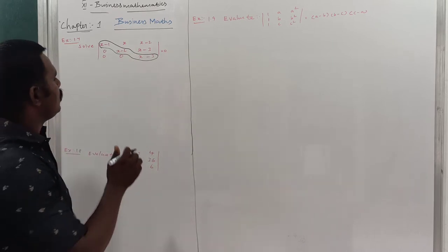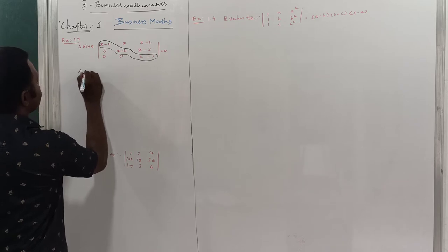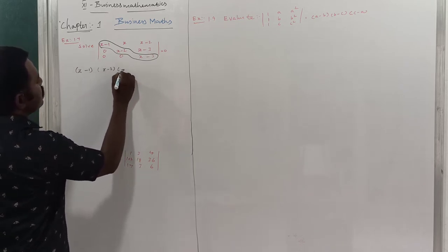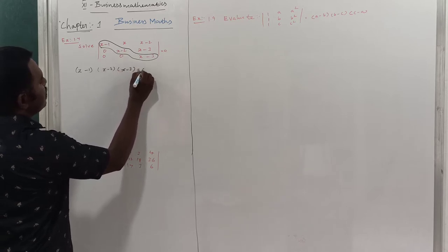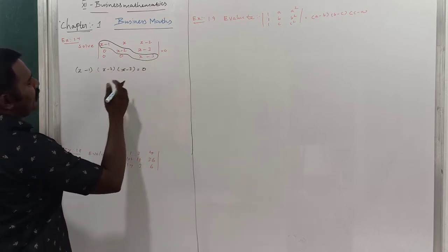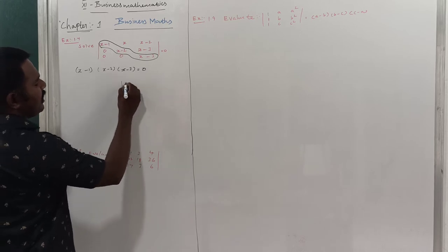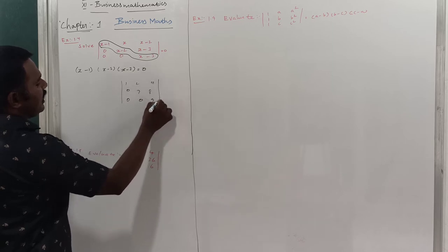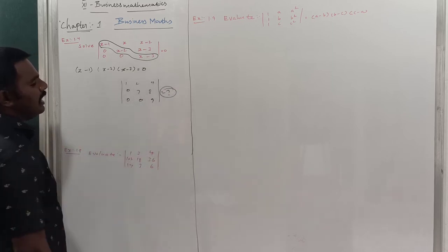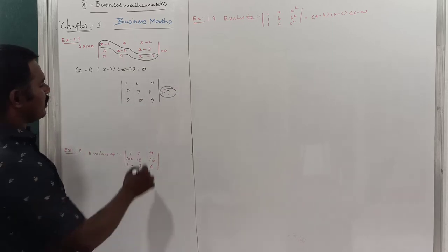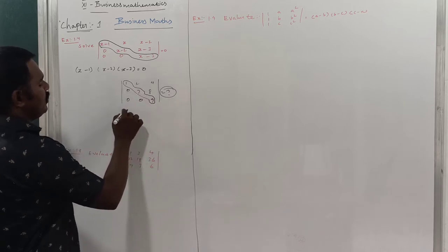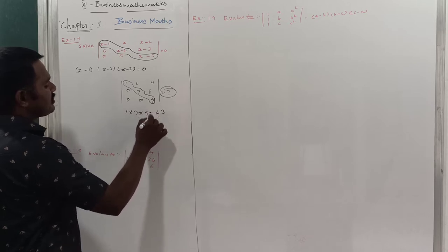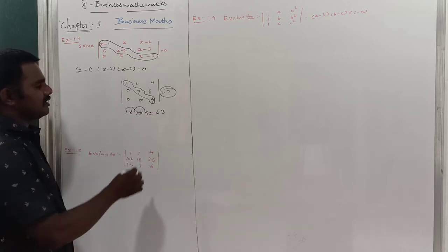Here is another example. Consider the matrix [1, 2, 4; 0, 7, 8; 0, 0, 9]. This is an upper triangular matrix, so the value of the determinant is the product of the main diagonal: 1 × 7 × 9. That gives 1 × 7 = 7, and 7 × 9 = 63.